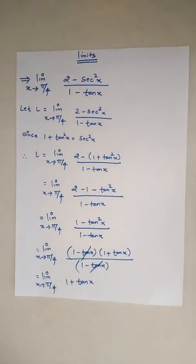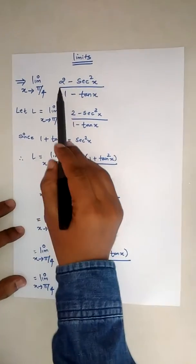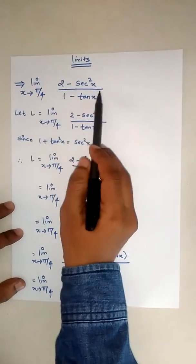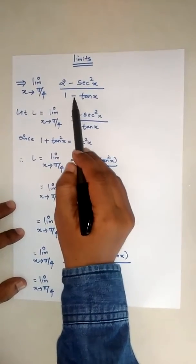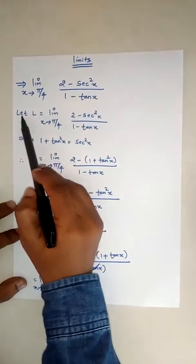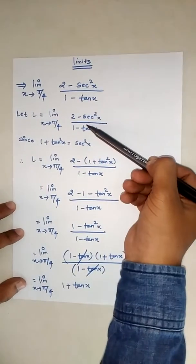Limit as x tends to π/4 of (2 - sec²x) divided by (1 - tan x). Let L be equal to this expression.